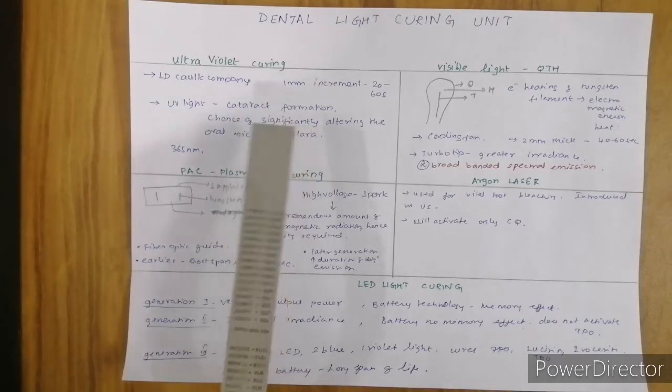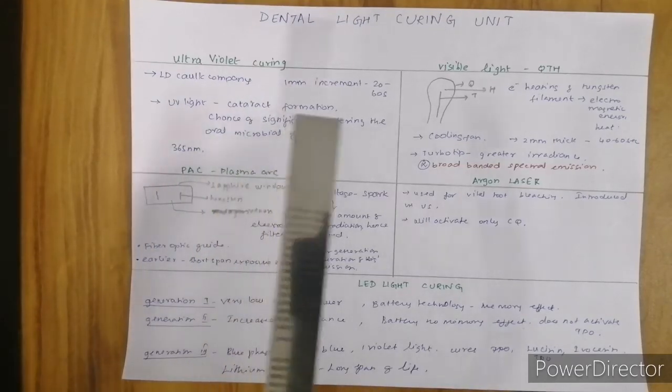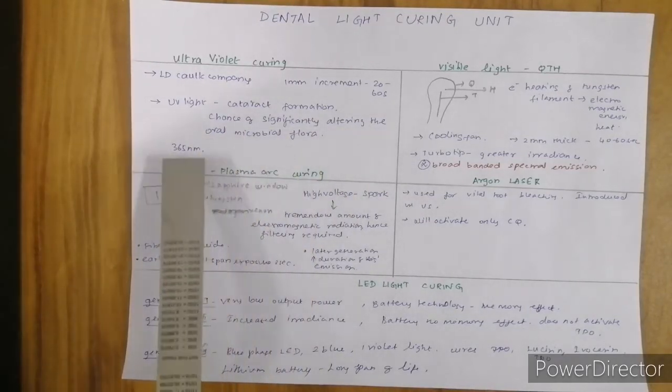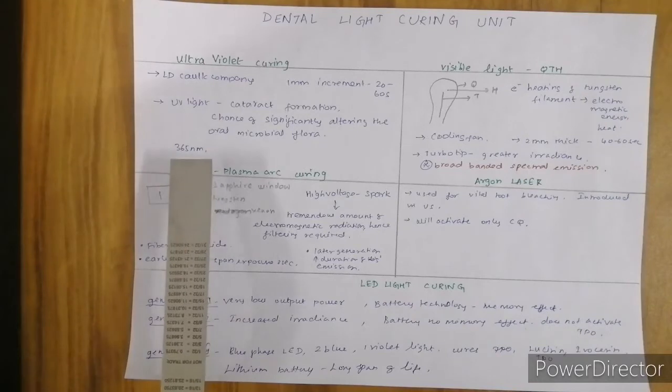Some disadvantages of ultraviolet curing include cataract formation in eyes and changes to oral microbial flora. An important point: we use a wavelength of around 365 nanometers, so only photo initiators sensitive to this wavelength can be activated.